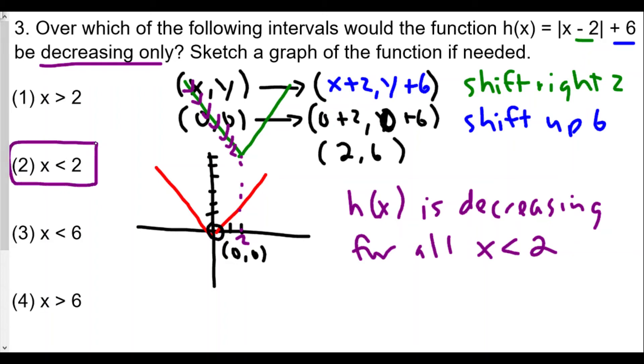Our answer for number three is choice 2, x less than 2. We find this by looking at the original function, the absolute value of x parent function, then seeing how it's shifted and taking a look at the turning point.